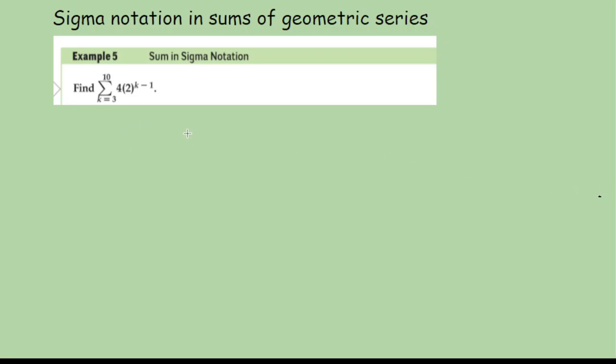All right. For this last video, we're using something called sigma notation, which you guys use with arithmetic series. It's actually quite a bit easier with geometric series because you don't have to use any factorials or anything like that. So when we do this, we call this sigma notation because that is sigma.